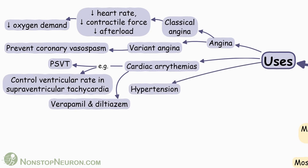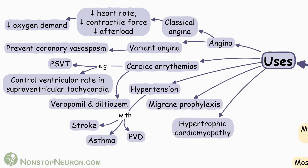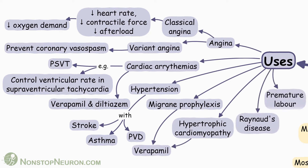Next, hypertension. Calcium channel blockers are suitable in hypertensive patients with a history of stroke, asthma, or peripheral vascular disease. They are also useful for migraine prophylaxis and hypertrophic cardiomyopathy — for these indications, verapamil is preferred. In Raynaud's disease and preterm labor, dihydropyridines are useful.